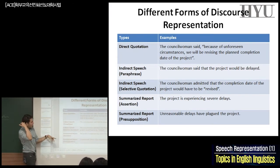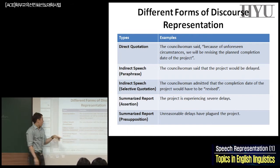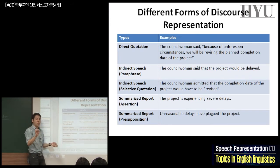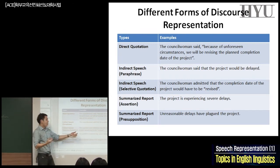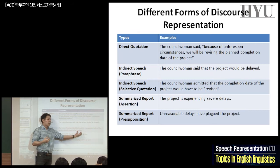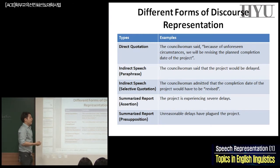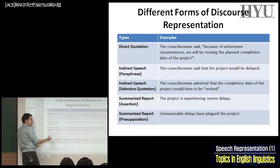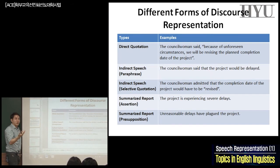We also have another type of reported speech — also indirect because it's not reported verbatim — but we have selective quotations, meaning the reporter just selects some words, not the entirety. Like here: 'The console woman admitted that the completion date of the project would have to be revised.' She selects just that one word, and other parts are indirectly reported, because the reporter thinks that particular wording is important.